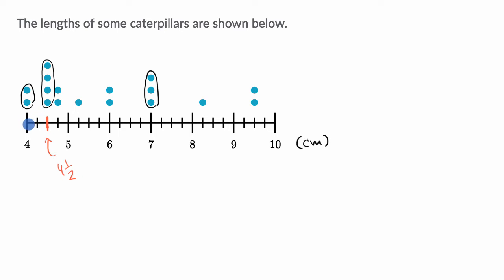We divide the section between four and five into two equal sections, and we're going one of those two equal sections towards five, so this is four and a half centimeters.